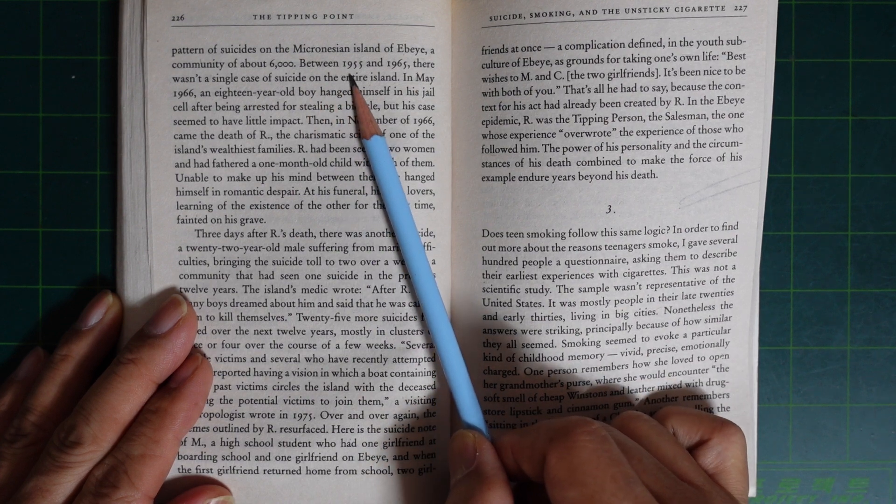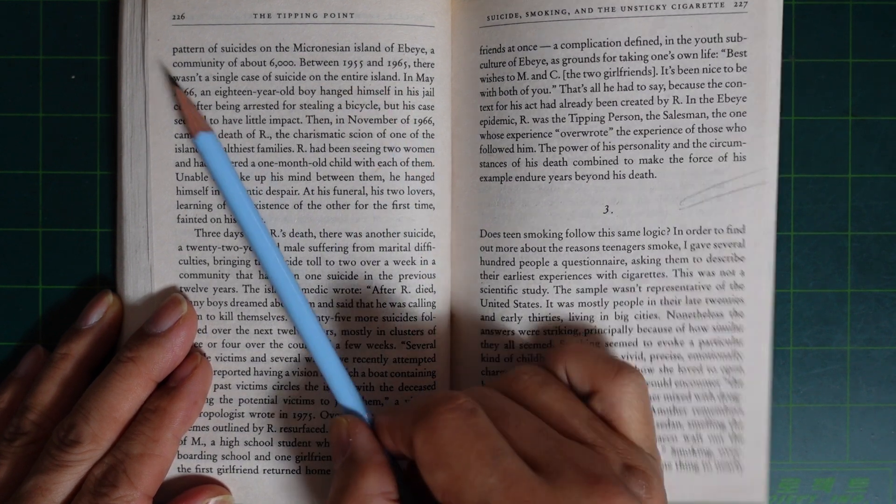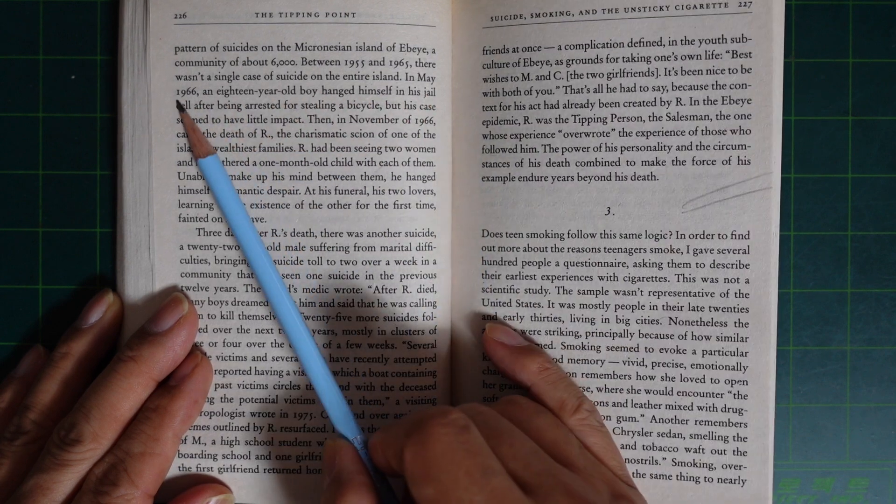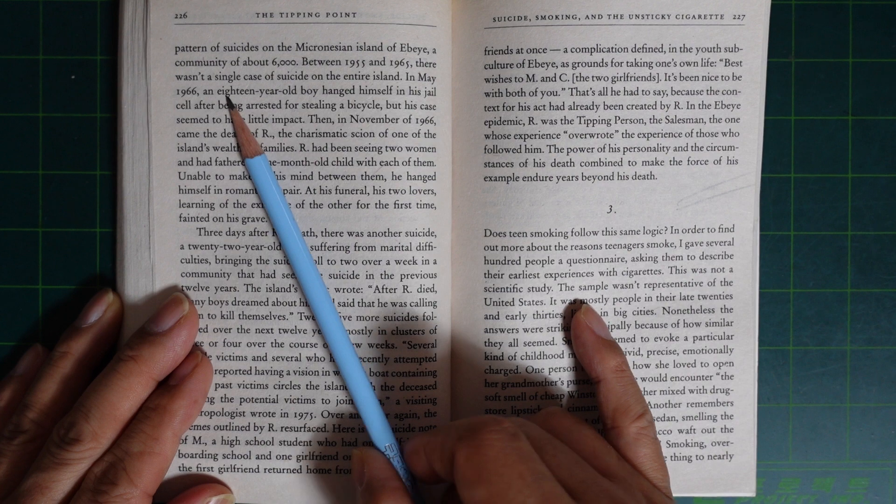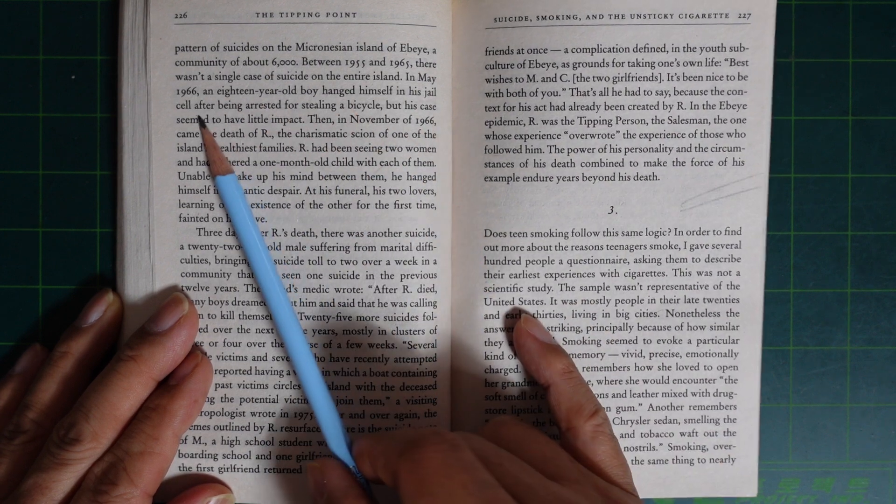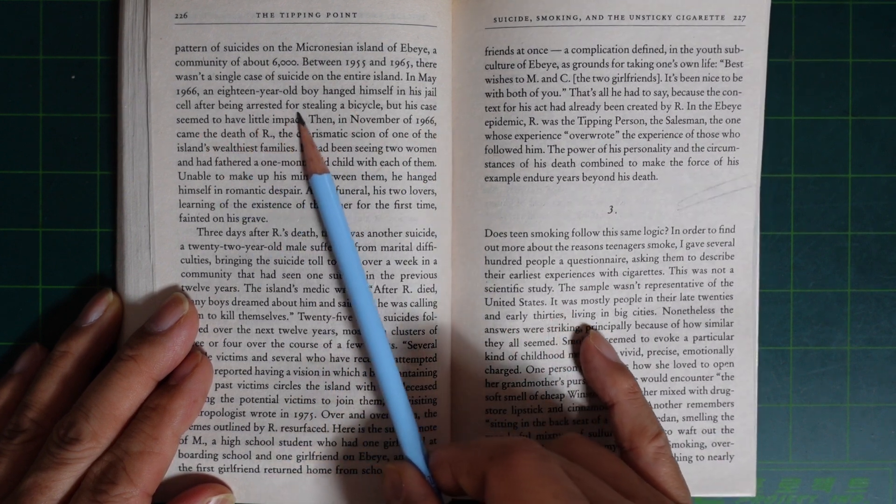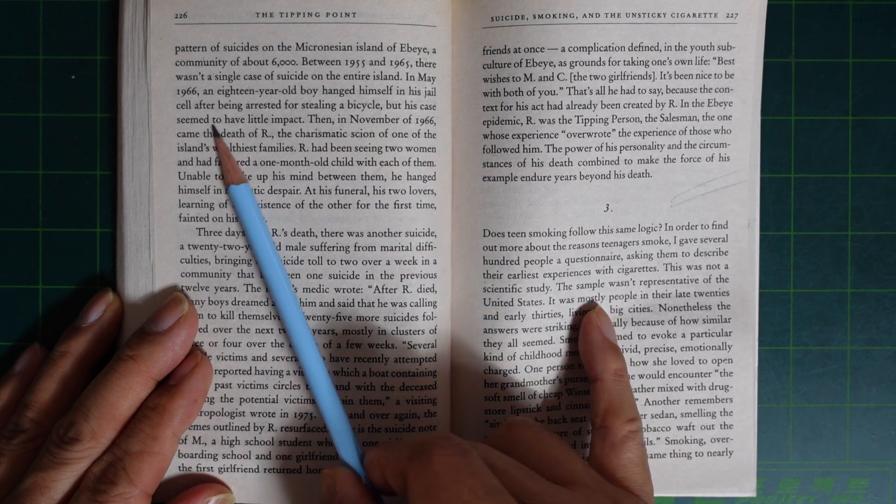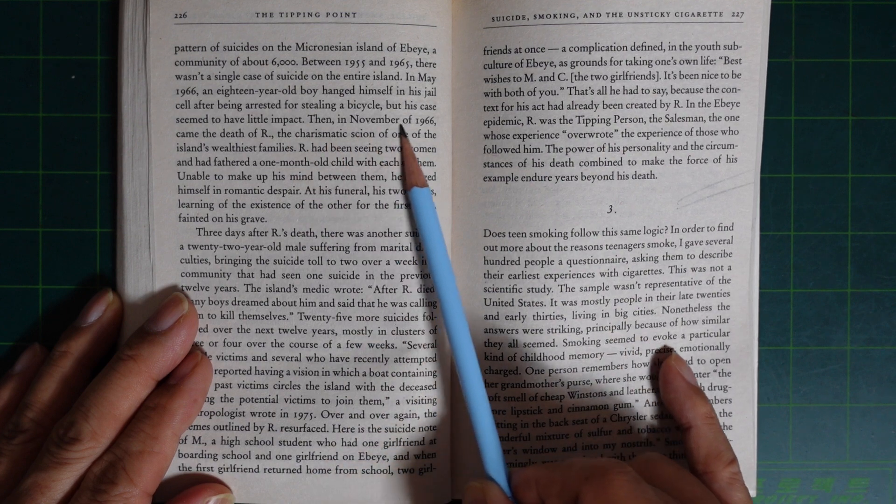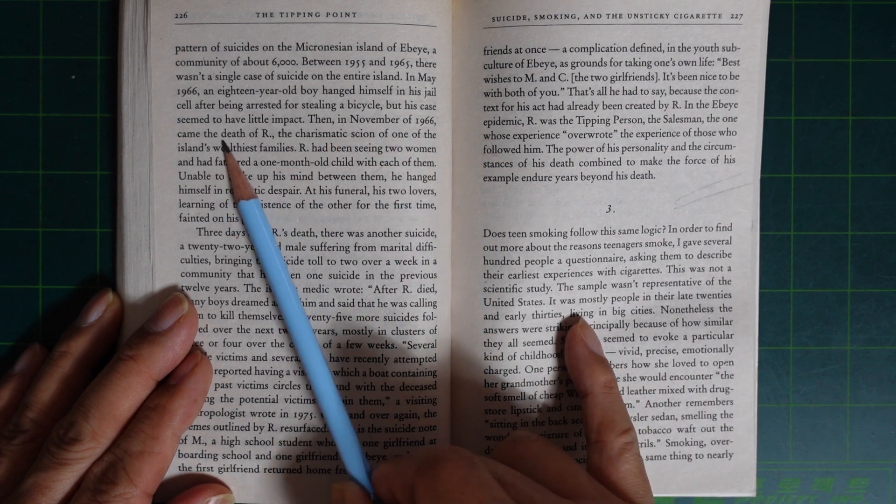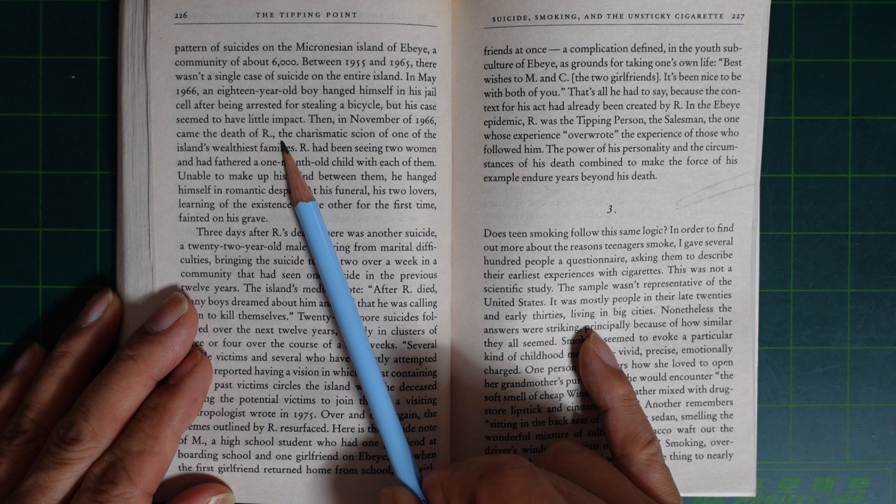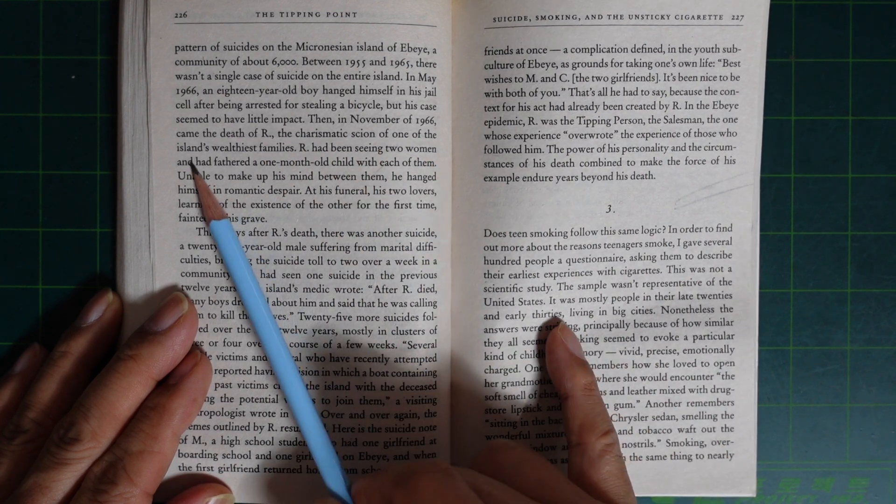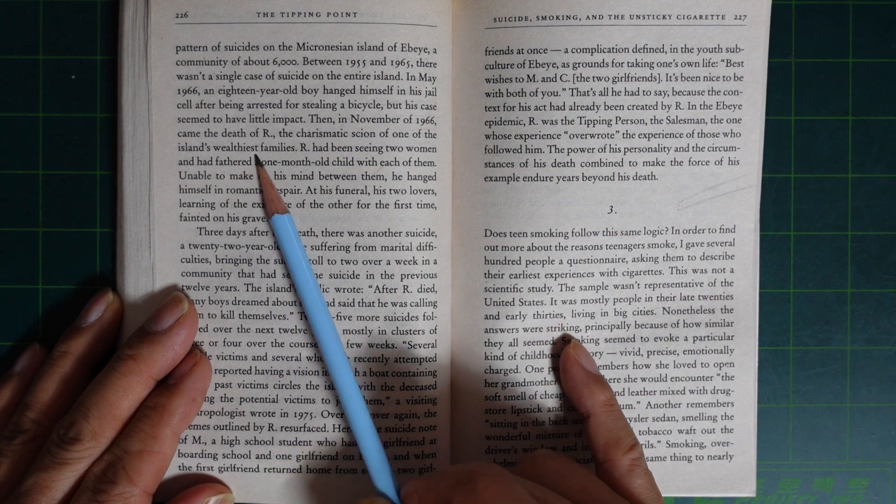Between 1955 and 1965, there wasn't a single case of suicide on the entire island. In May 1966, an 18-year-old boy hanged himself in his jail cell after being arrested for stealing a bicycle, but this case seemed to have little impact. Then in November of 1966 came the death of R, the charismatic scion of one of the island's wealthiest families.